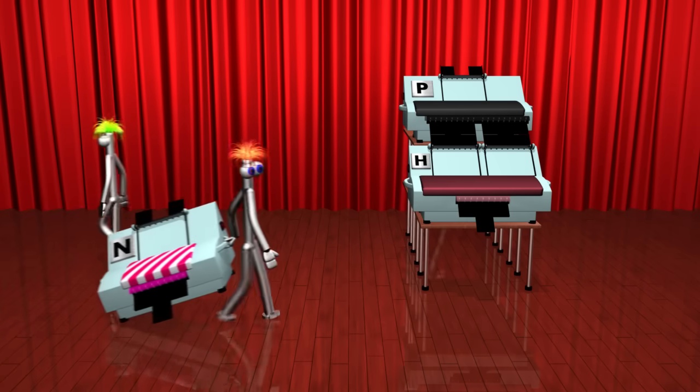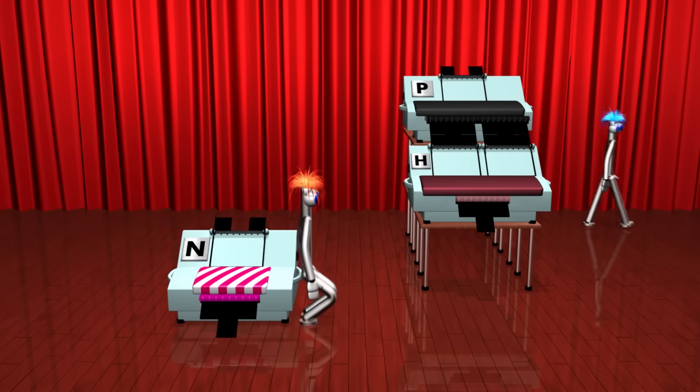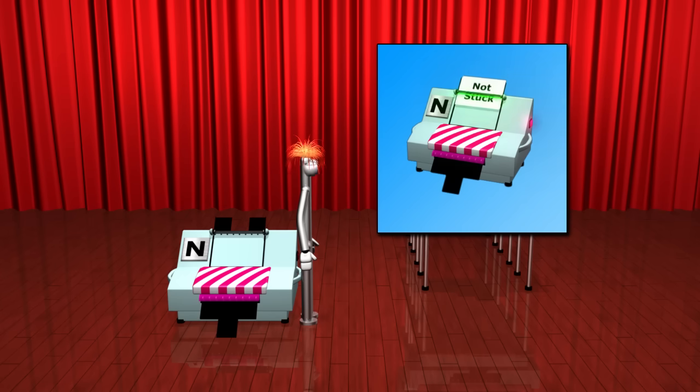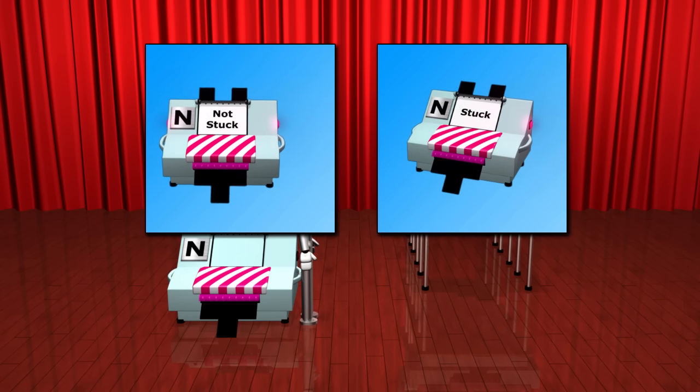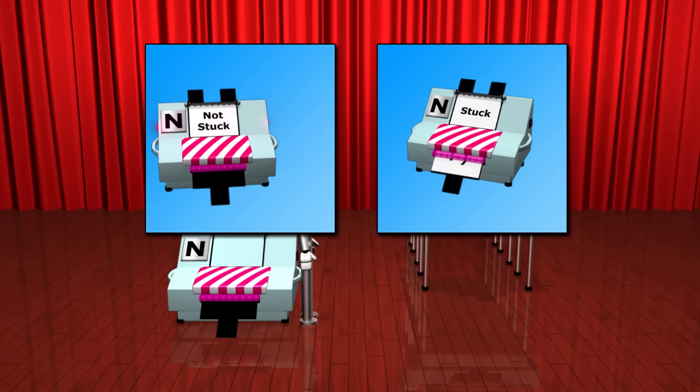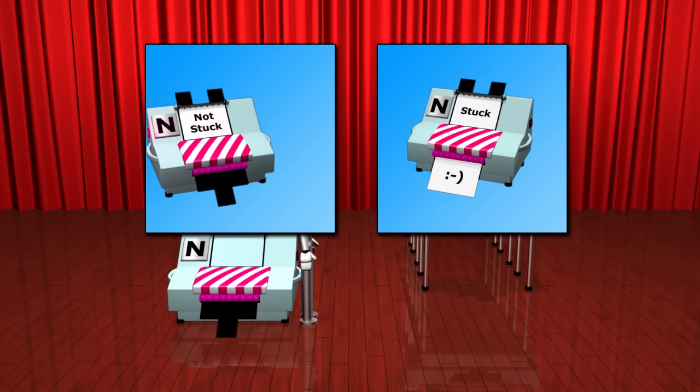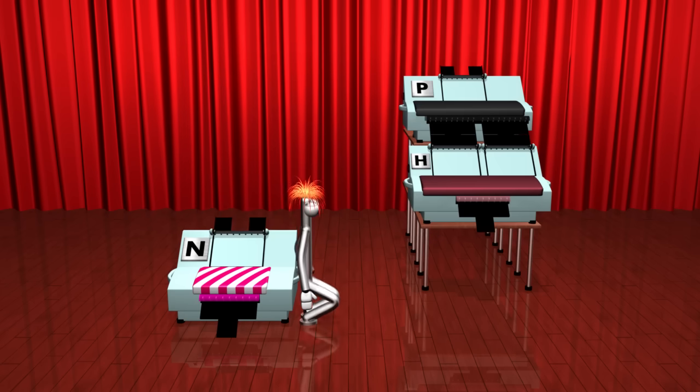Here's another simple machine. We call this one the negator. When the negator receives the words not stuck, it gets stuck. And when it receives the words stuck, it does not get stuck. And it prints a smile. We'll place it in front of H.